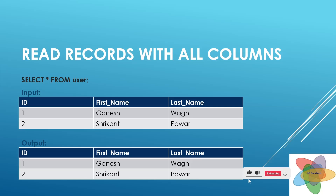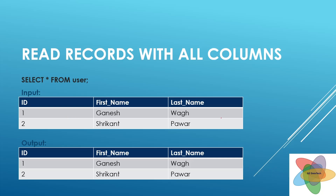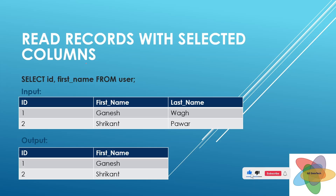If we want to fetch all the columns in our output, we can use SELECT star — the asterisk represents all the columns. Here we have a user table having columns: id, first_name, last_name, with some records. If we execute the SQL query SELECT * FROM user, since star represents all columns, in the output we will get all columns: id, first_name, last_name.